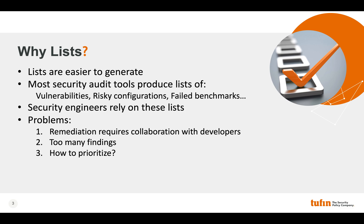For example, our security architect at Tufin — we have 2,000 enterprise customers who use our software, so security is super important for us — he prioritizes according to only critical and high severity findings, and only the ones that are exposed externally, so the first tier of pods in the cluster, the ones behind the ingress. Prioritization is difficult, and if you use the severities in the tools, they're often not a good indication because these tools don't consider the context.